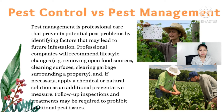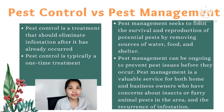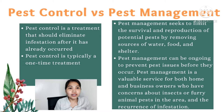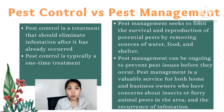Given the definition, can you now differentiate pest management versus pest control? In pest control, it is a treatment that should eliminate infestation after it has already occurred. It is also typically a one-time treatment. While pest management seeks to limit the survival and reproduction of potential pests by removing sources of water and food. Unlike pest control, pest management can be ongoing to prevent pest issues before they occur. It is of great value to both homes and businesses concerned about insects or furry animal pests and the recurrence of infestation.